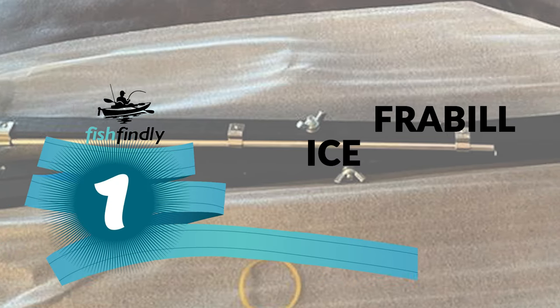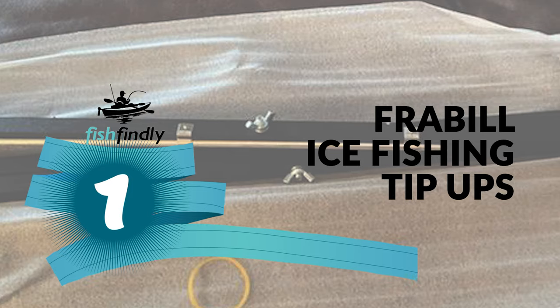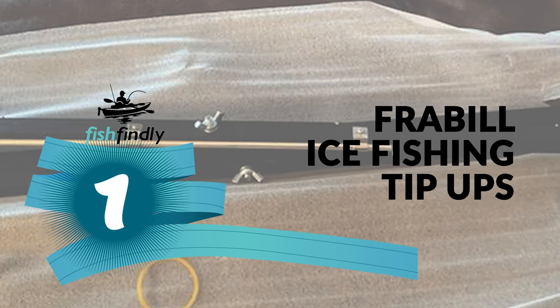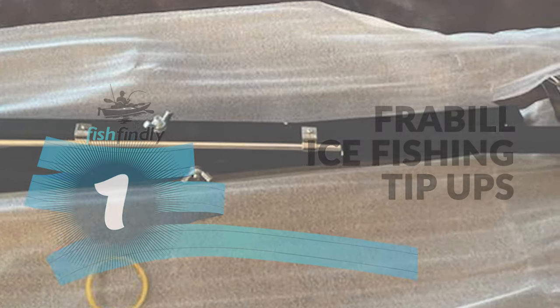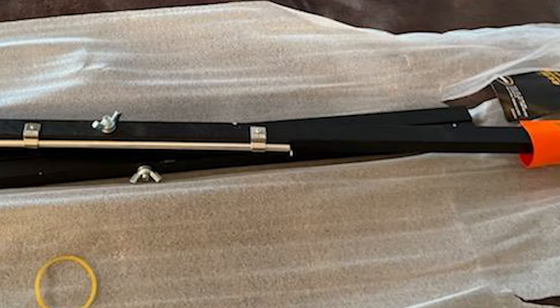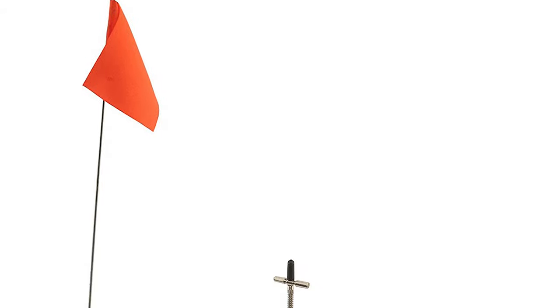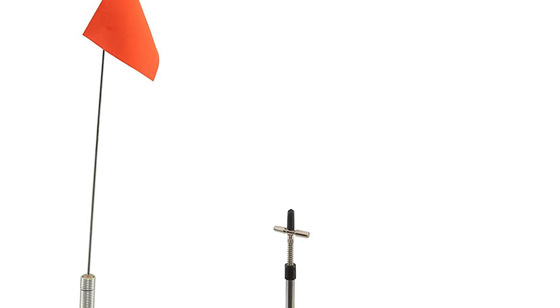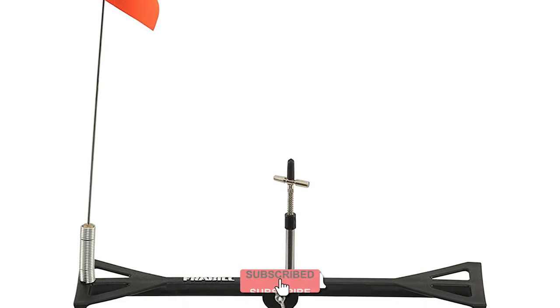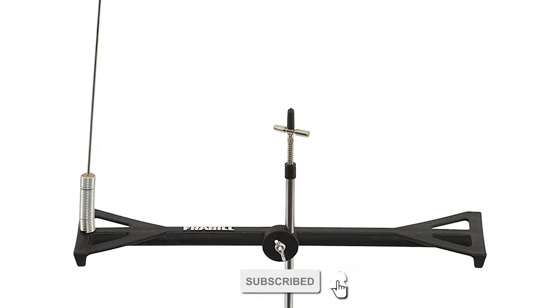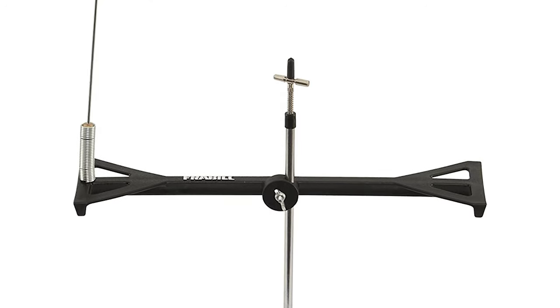Number one, Frabill ice fishing tip-ups. The Frabill ice fishing tip-ups is so named because of the characteristic shape of its plastic base, wide at the ends and narrow at the center. This unusual design has a lot of fans. In fact, it's often mentioned as the single best base on the market. It can be easily carried and stored and they're more than enough tip-up for most anglers.